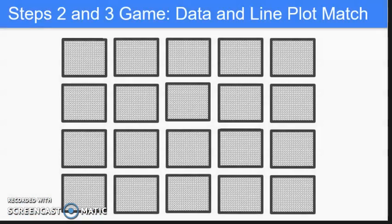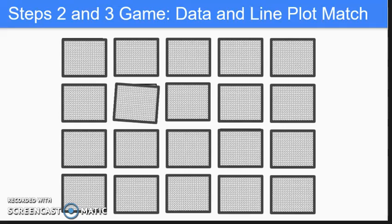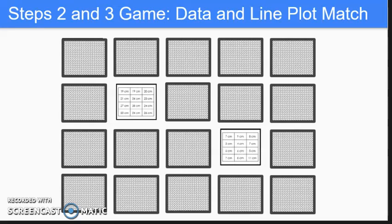The game for this step, and for Step 3, is called Data and Line Plot Match. It is played like last week's game from Step 1. Students will cut apart the boxes and lay them face down in an array. On a player's turn, they turn over two cards. If the data and line plot match, they keep the card. If the data and line plot do not match, they turn the cards back over.